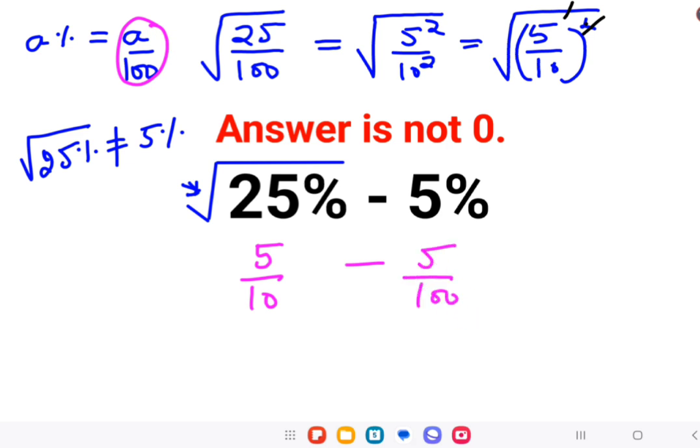So now out of 10 and 100, the LCM is 100. So for this 10 to become 100, we need to multiply it by 10. Here also we'll multiply by 10 to make the fraction balanced. So 5 times 10 is 50.